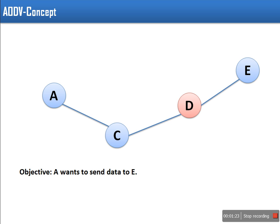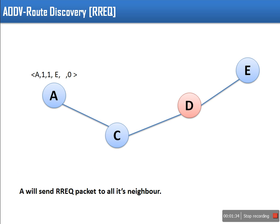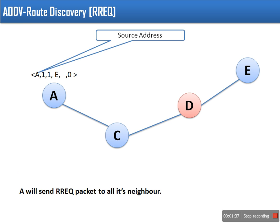So this is our example. Node A wants to send data to E. A is not having any idea about E, so A will send a route request packet to its neighbors. These are the contents of the route request packet: source address, and here we are taking sequence number 1. This sequence number can be anything because node A keeps on increasing this value.